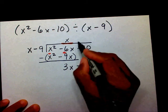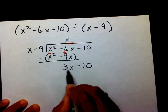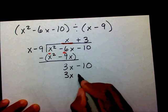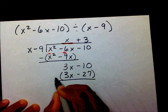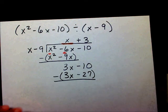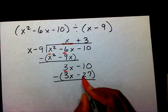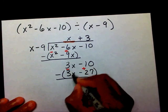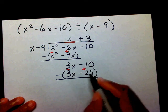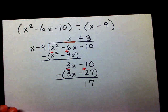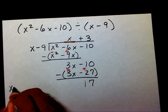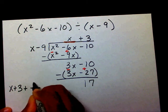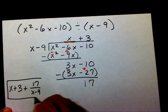Now I need to know what number times x will give me 3x. Well, plus 3. 3 times x is 3x, and 3 times negative 9 is negative 27. So I need to subtract this binomial. This plus 3x will become a minus 3x, and this minus 27 will become a plus 27. The 3x's will cancel each other out. Negative 10 plus 27 is 17. So my final answer is x plus 3. Since this is a positive 17, I'm going to write plus 17 over x minus 9.